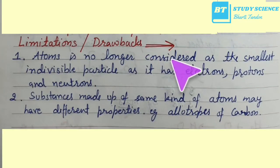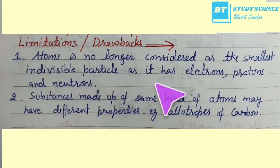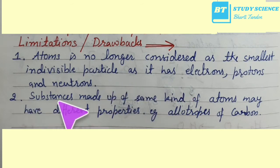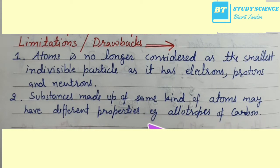Now, limitations and drawbacks of Dalton's Atomic Theory. First, the atom is no longer considered the smallest indivisible particle, as it has electrons, protons, and neutrons — which we will study in the next chapter. Second, substances made up of the same kind of atoms may have different properties — for example, allotropes of carbon.